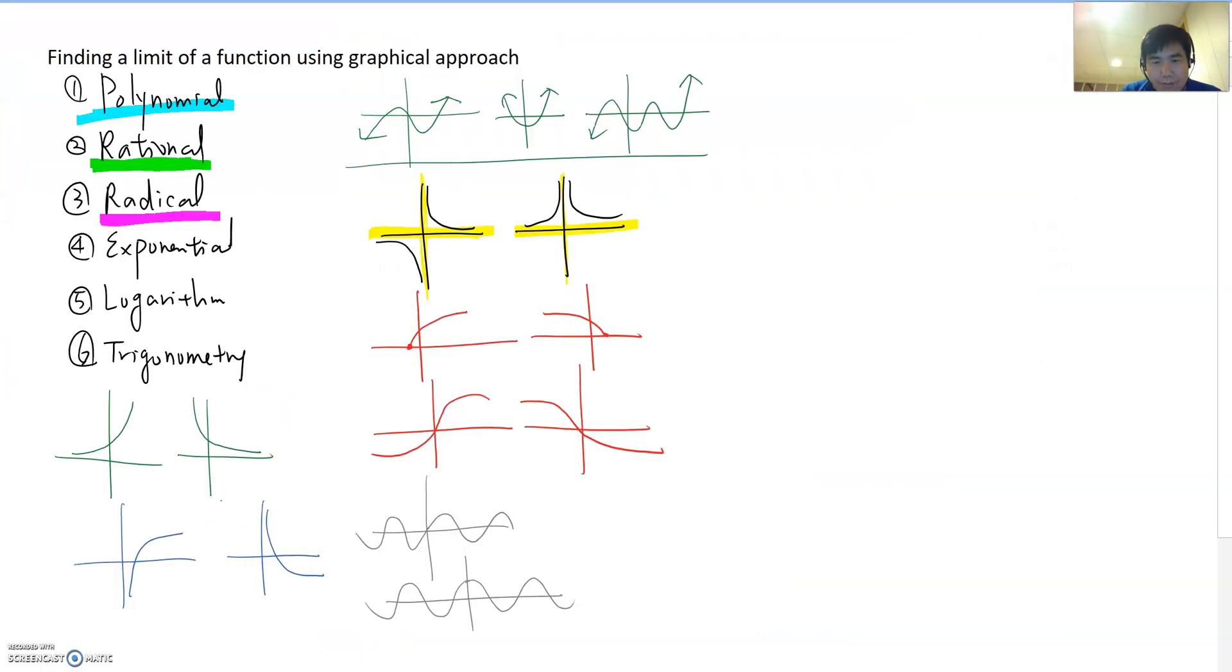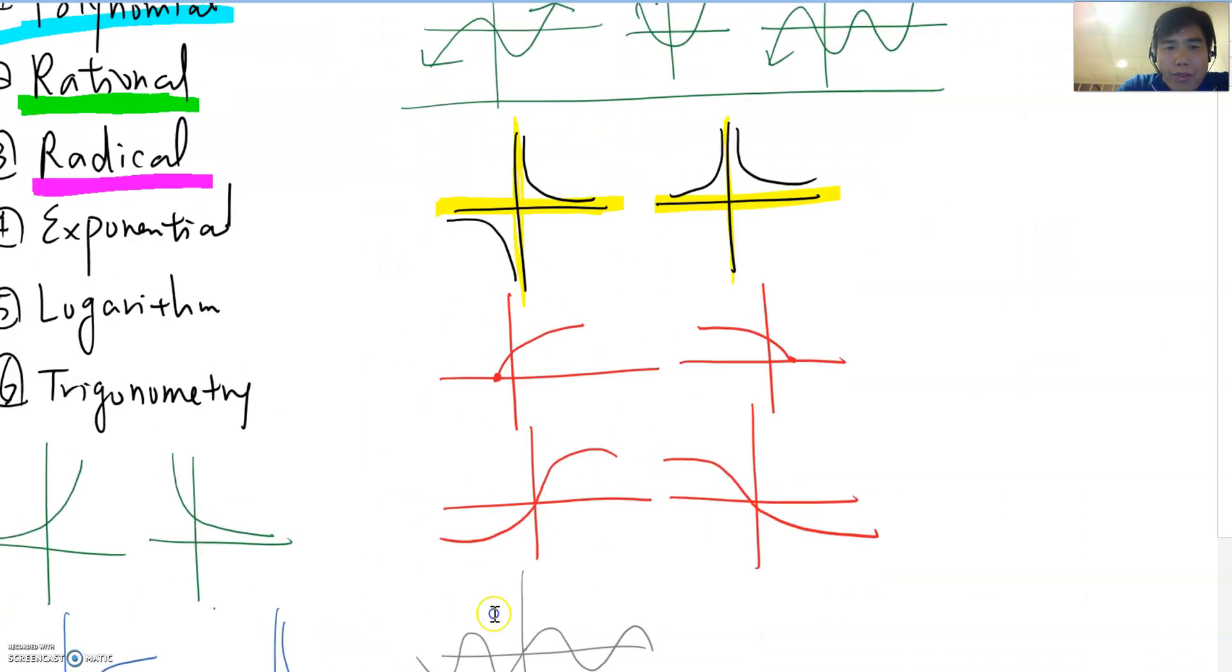So now what is the meaning of this? So how can we say that? So we just set up limit x move to 2 and then x square minus x minus 3 then become negative one. Then what does this mean?